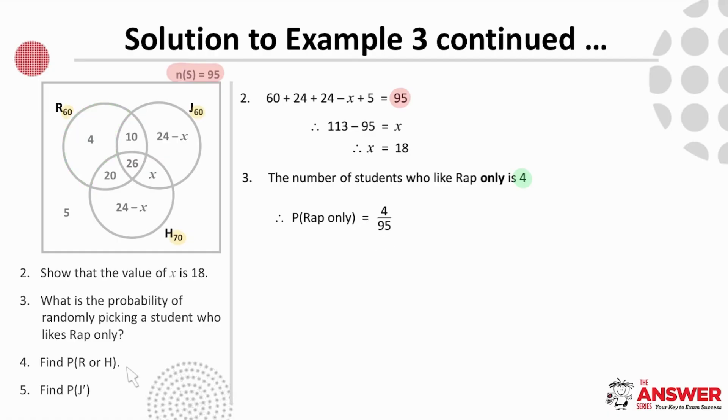Next, find the probability of Rap or Hip Hop. Now that we know X is 18, the number in R or H is 60 plus 18 plus 6. And so the probability is 84 over 95.